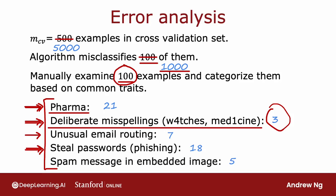After this analysis, if you find that a lot of errors are pharmaceutical spam emails, this might give you ideas for what to do next. For example, you may decide to collect more data — not more data of everything, but specifically more pharmaceutical spam examples so the algorithm does a better job recognizing them. Or you may decide to create new features related to specific drug names or pharmaceutical product names that spammers are trying to sell.